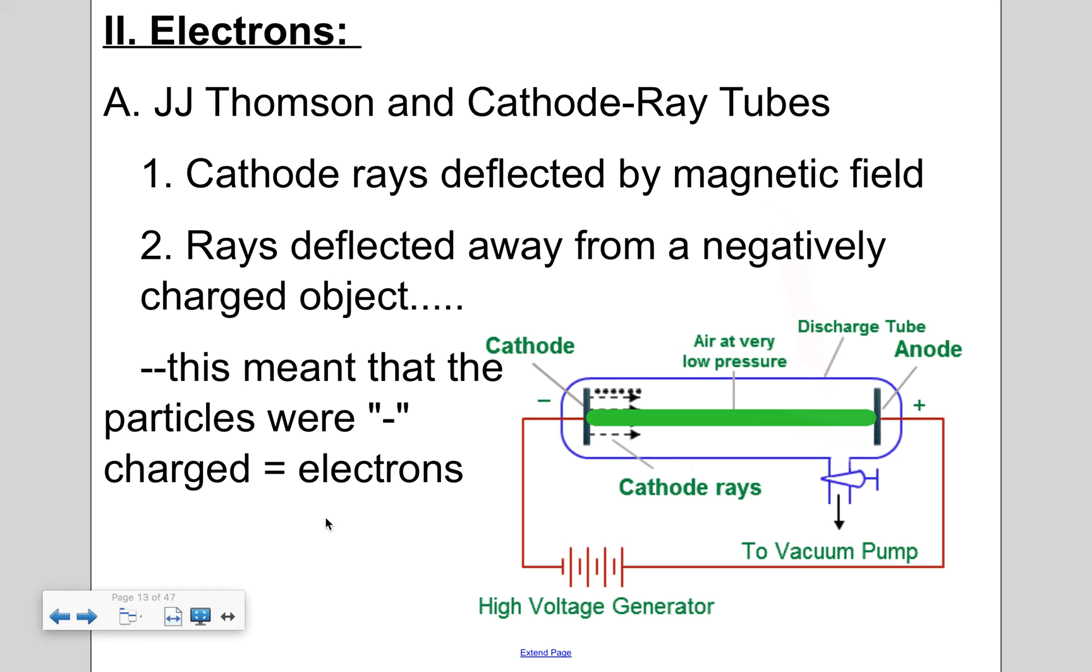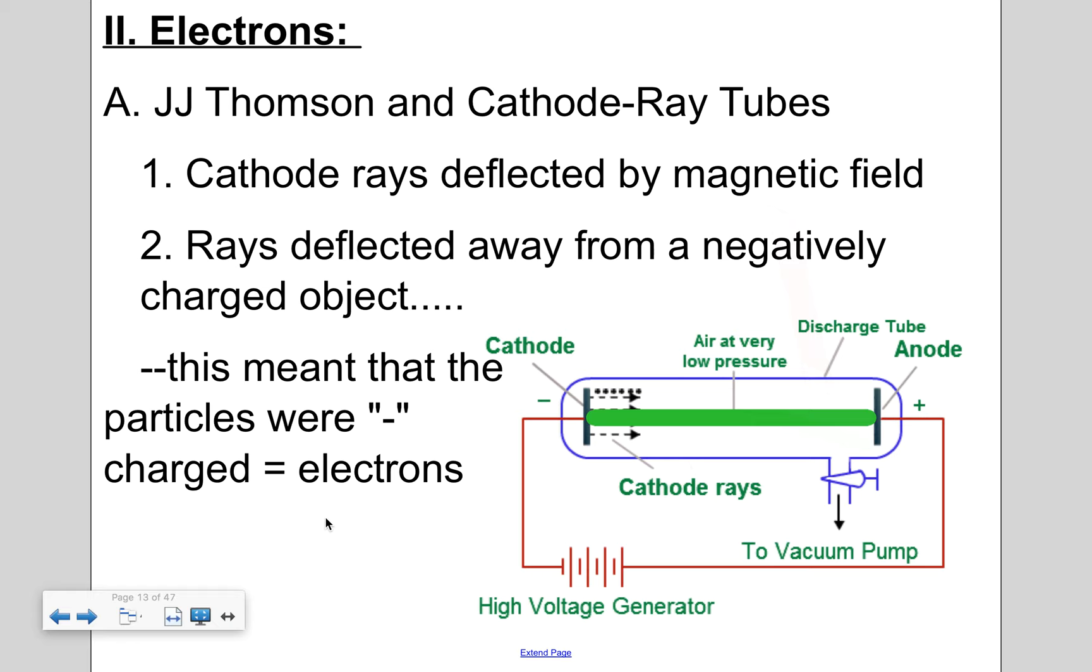So what I'm going to do now is talk about how did scientists discover electrons, protons and neutrons.